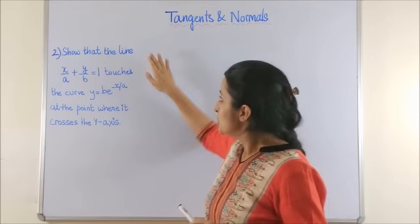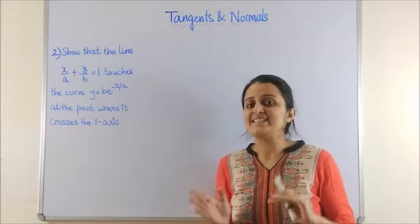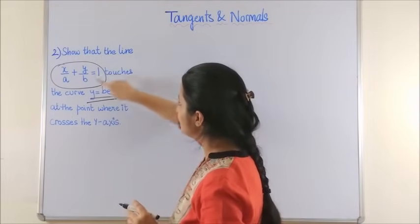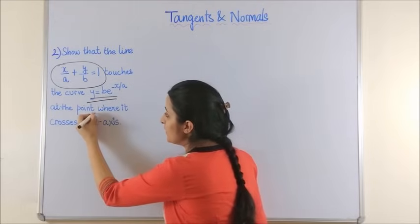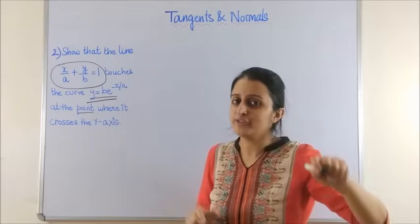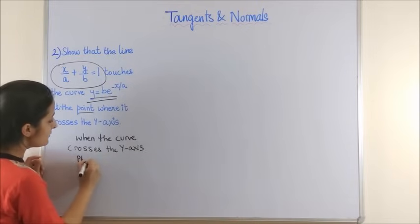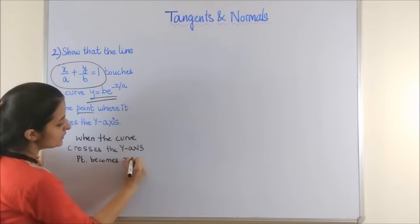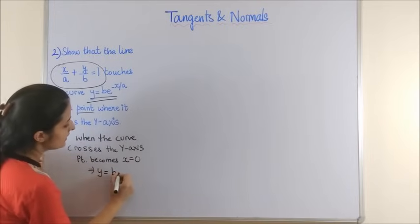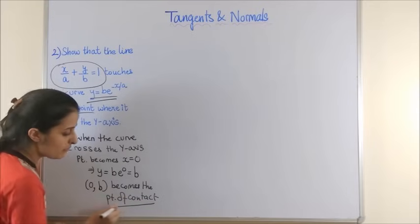The second question says: show that the line touches the curve at the point where it crosses the y-axis. Let's comprehend what we need to do. We need to find where the curve crosses the y-axis, i.e., where x = 0. Substituting x = 0 into the curve gives y = b · e⁰ = b. So the point of contact is (0, b). All we need to show is that the equation of the tangent to this curve at this point is the given line.